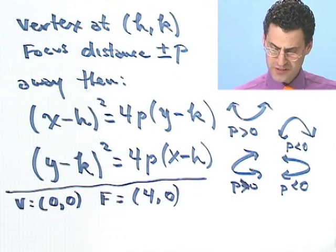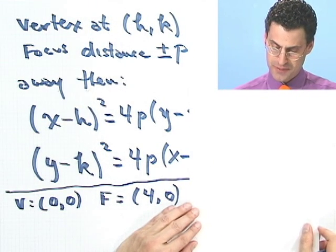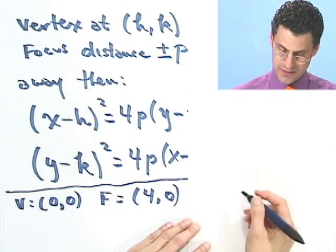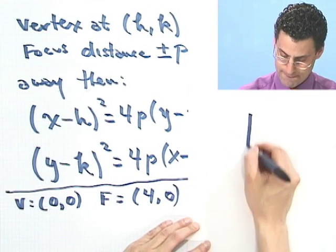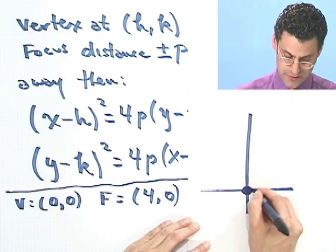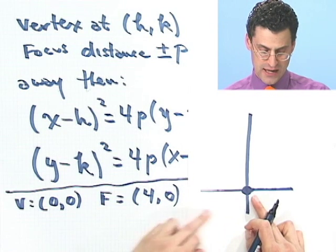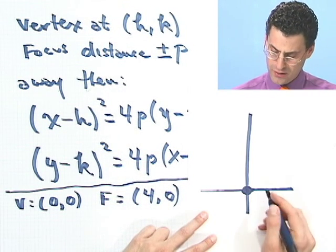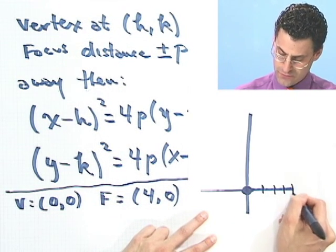What would you do? Well, first of all, I would sketch a picture of it to see what's going on here. So if you sketch a little picture of it, it would look something like this. Well, let's see. We've got the vertex is here at (0,0). And the focus is at (4,0).